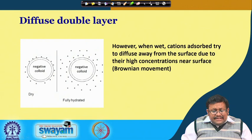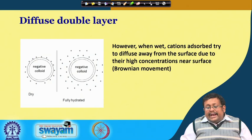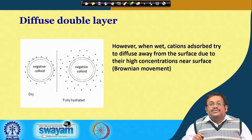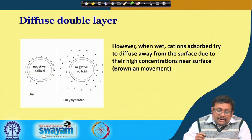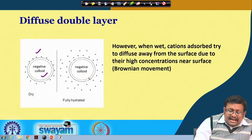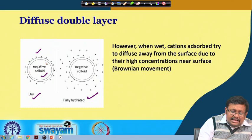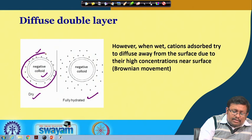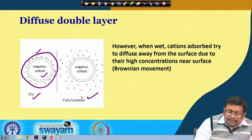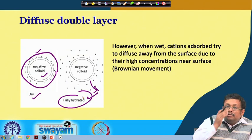The diffuse double layer comes into question when the soil is wet. When wet, the adsorbed cations try to diffuse away from the surface due to their high concentration near the surface — this is due to Brownian movement. In the dry condition, the negative colloid is surrounded by tightly bound positive cations, but in fully hydrated condition these cations diffuse away, which is when the diffuse double layer comes into action.